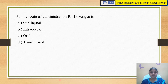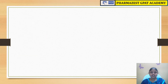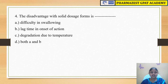The next question is: the route of administration for lozenges is? The options are A) sublingual, B) intraocular, C) oral, and D) transdermal. The right answer is oral. Lozenges are meant for the oral route of administration.